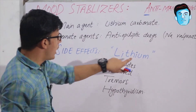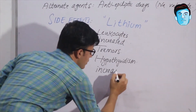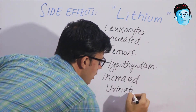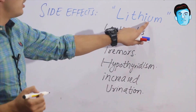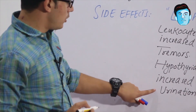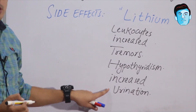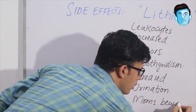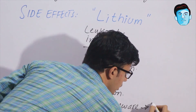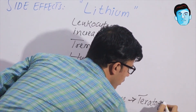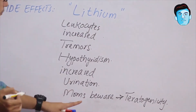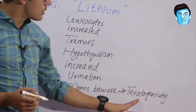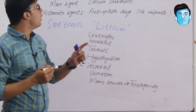H stands for hypothyroidism. I stands for increased and U stands for urination — so the patient will suffer from increased urination. M stands for moms — be aware — because these anti-manic drugs cause teratogenicity, meaning they may affect the fetus.